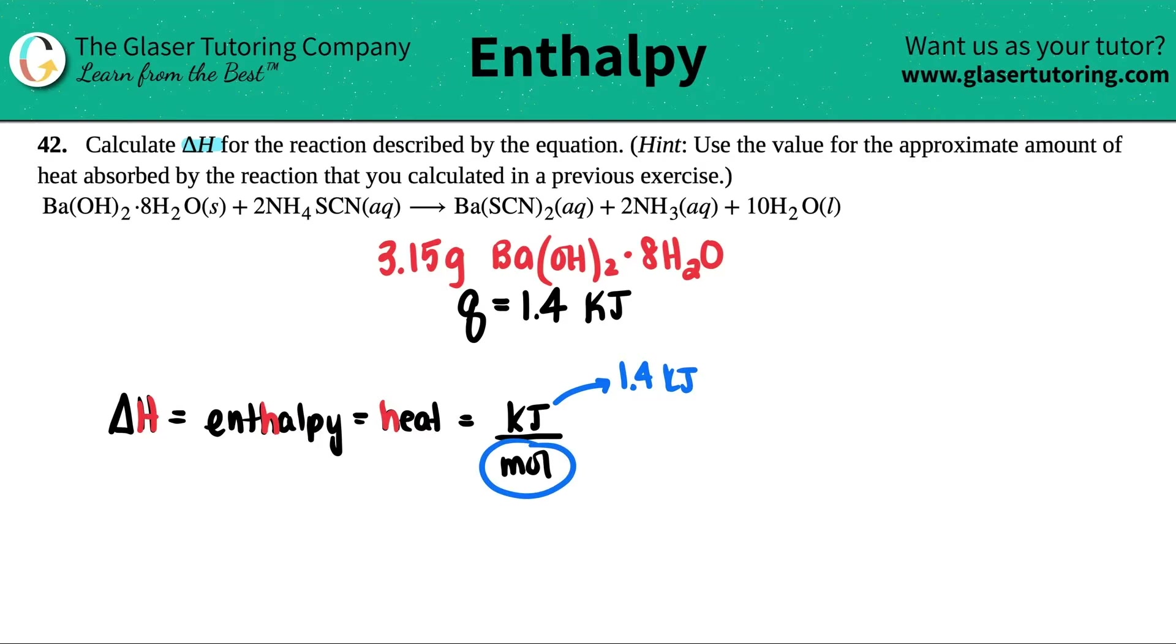So I know that we have 1.4 kilojoules. Now all we got to do is find out the moles. Well, that's why we knew that there was 3.15 grams of the barium hydroxide that was being used. Now in this case, if we go back to number 27, there was two different numbers, right? There was the barium hydroxide and this amount. But if we're trying to find a delta H value, it's always per one mole of the equation. In this equation, the barium hydroxide, there was only one of them. So that's why I took the 3.15 grams.